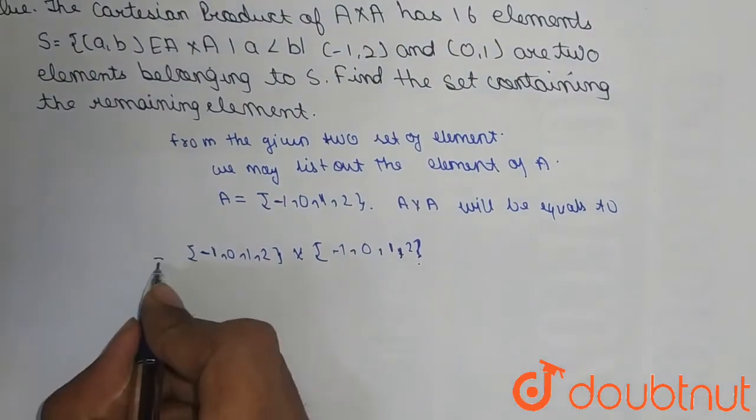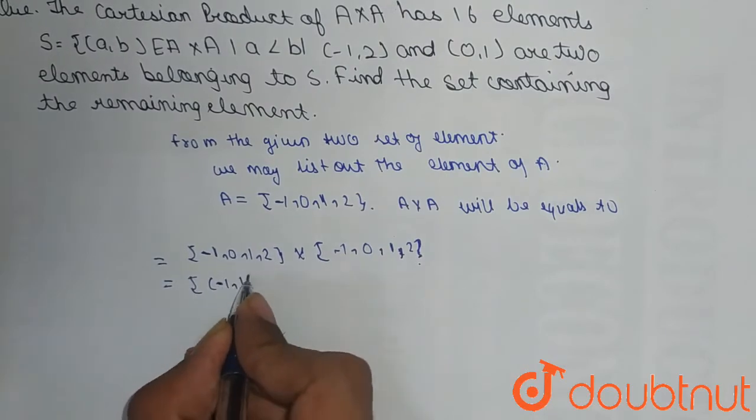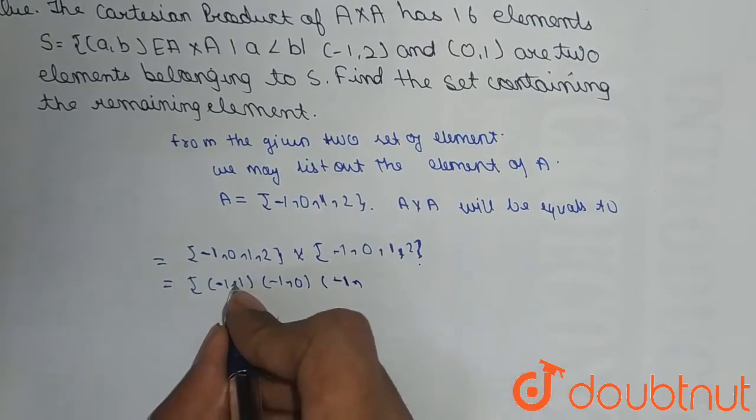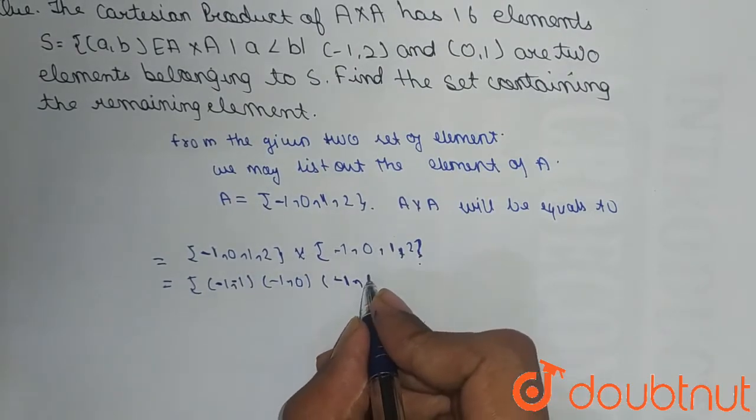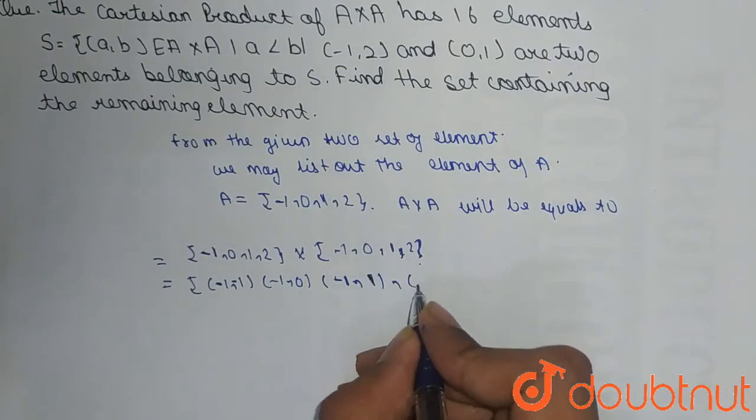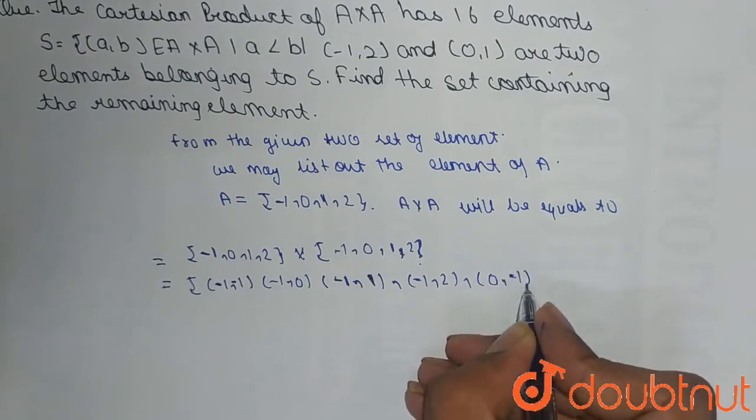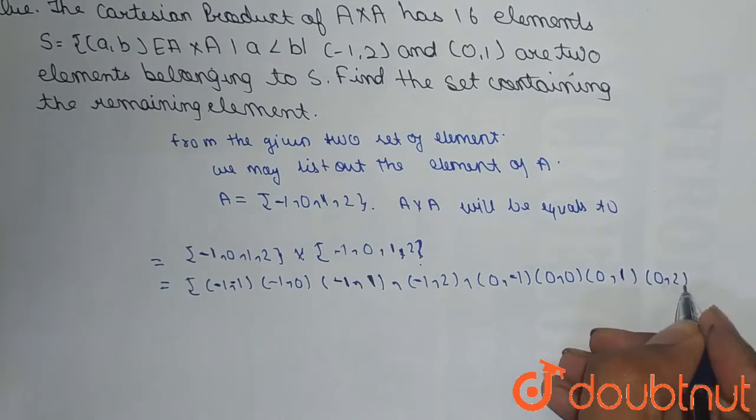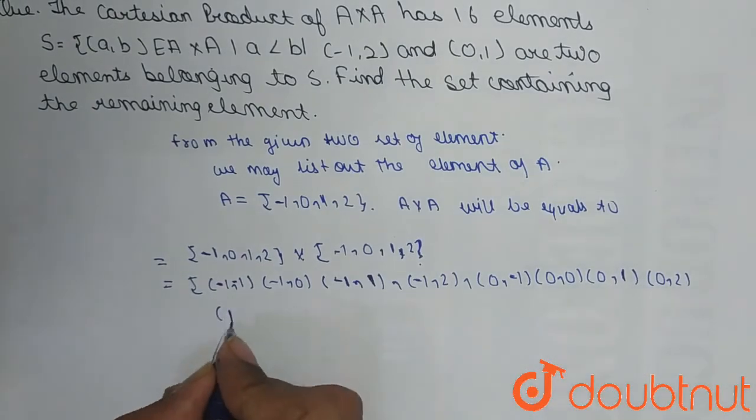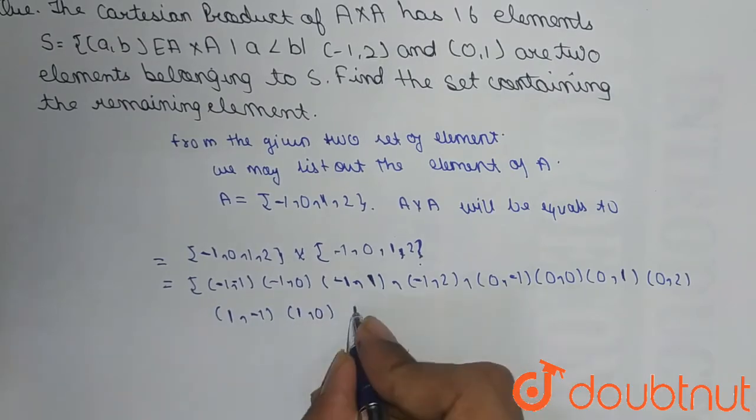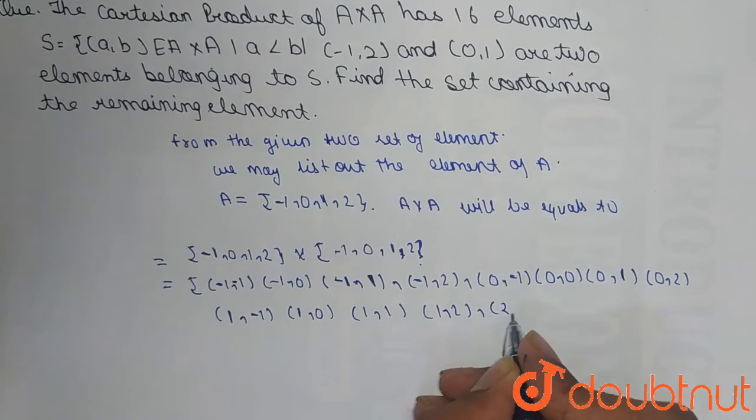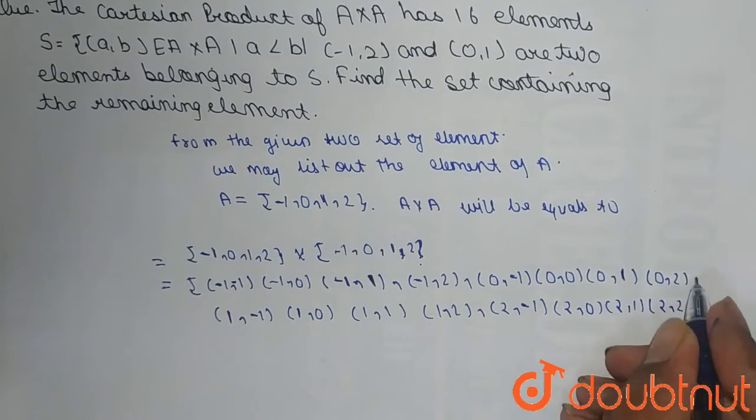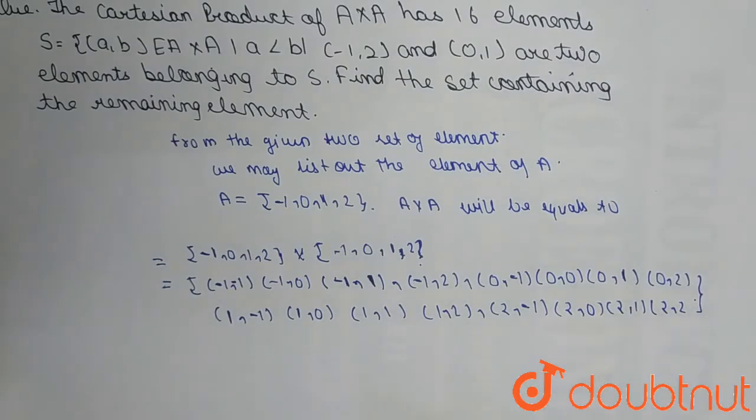So this will be equal to (-1,-1), (-1,0), (-1,1), (-1,2), (0,-1), (0,0), (0,1), (0,2), (1,-1), (1,0), (1,1), (1,2), (2,-1), (2,0), (2,1), (2,2). This will be our A cross A.